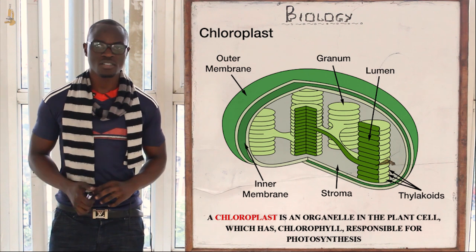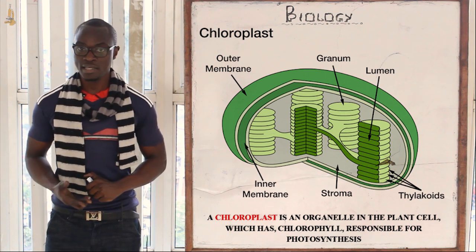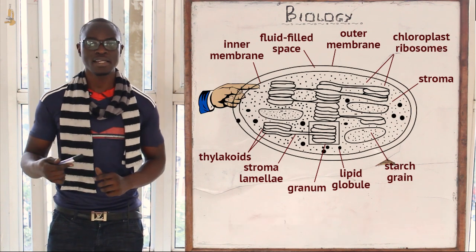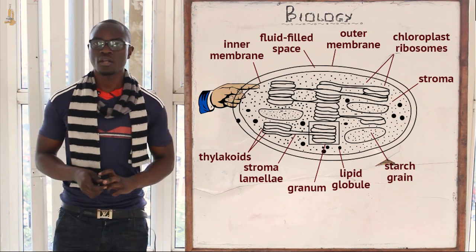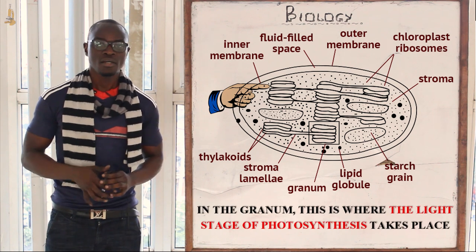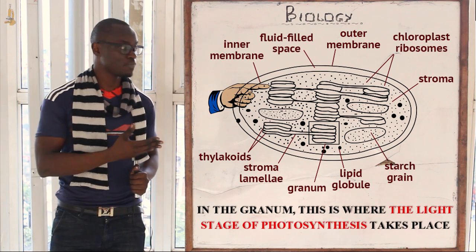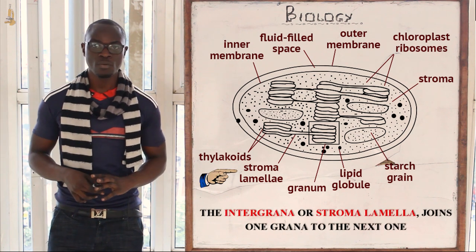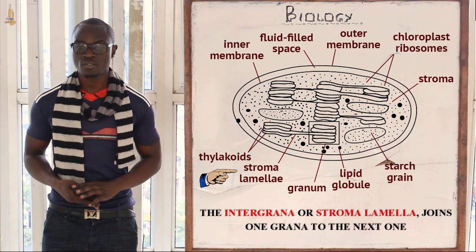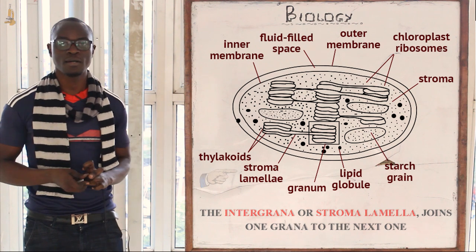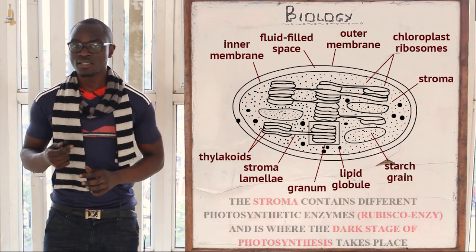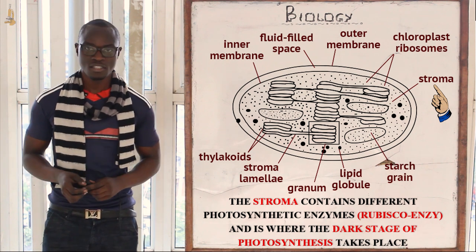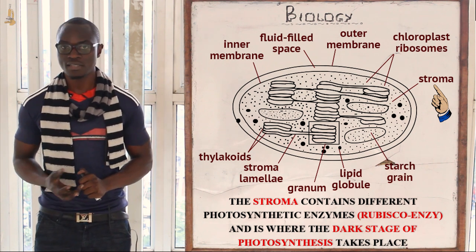It is a spherical structure which mainly comprises of the outer and the inner membrane. Inside the chloroplast we have coin-like structures which are called grana, whereby the light stage of photosynthesis takes place. After the grana, we have the straight line which joins one grana to the next, which is called the intergrana. The grana are suspended inside the stroma, whereby the stroma is where the dark stage takes place, and the stroma contains enzymes.